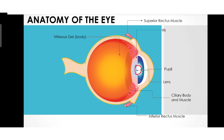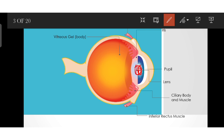Now moving on to the pupil. The pupil is a small rounded opening of the iris through which light passes. The pupil dilates and constricts when subjected to dim and bright light respectively. When we are in a dark room, our pupil dilates so that maximum light can enter our eyes. And when we are in a very bright light area, our pupil constricts to regulate how much light enters the eye.